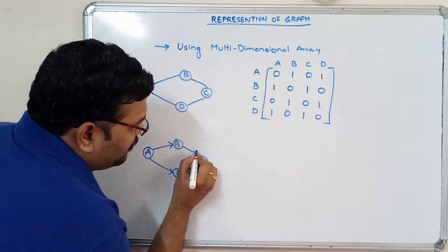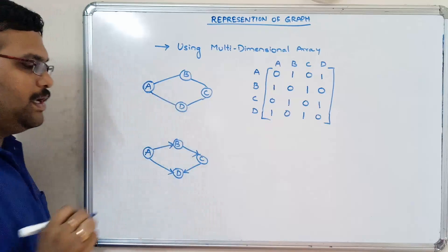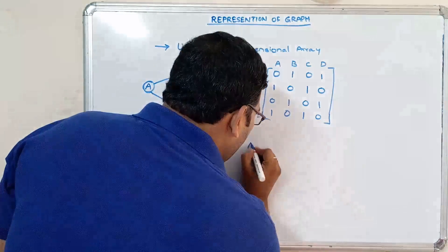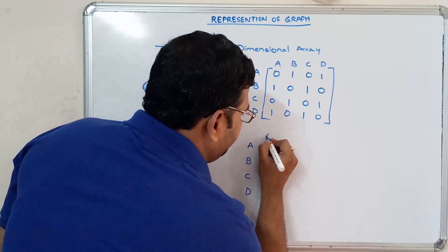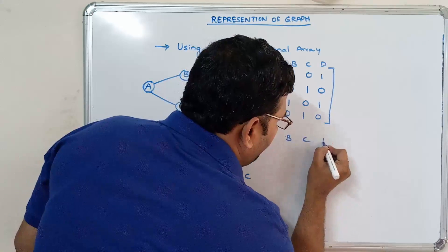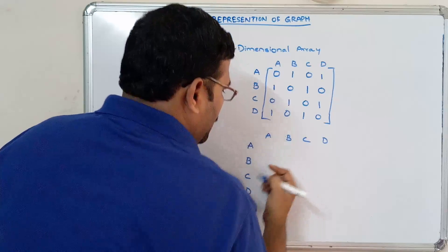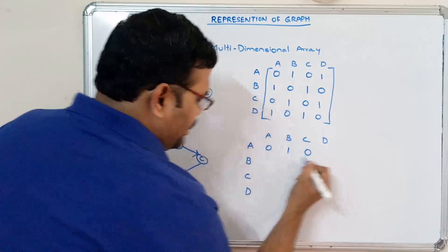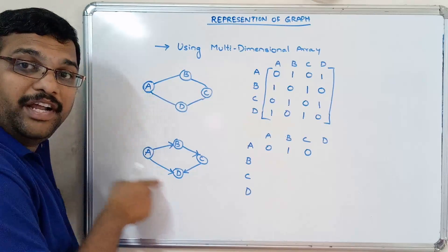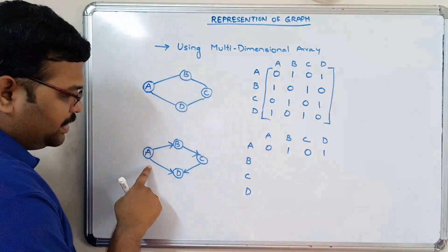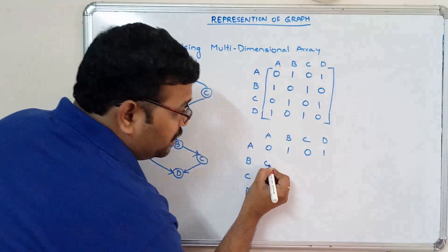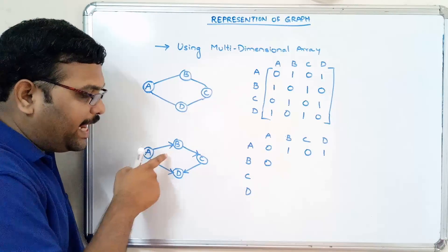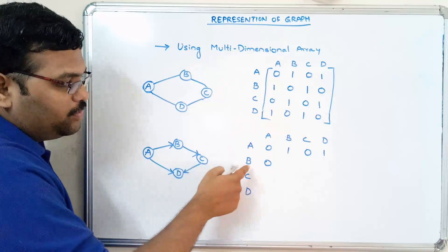Now if it is a directed graph — this is a unidirectional graph — let us see the matrix. A to A — no. A to B — there is one edge. A to C — zero. A to D — yes, there is an edge, so A to D is also one. Similarly, B to A — zero. Because here A to B is not equal to B to A, since there is a directed graph. The direction is towards A to B, not from B to A. So B to A is zero.